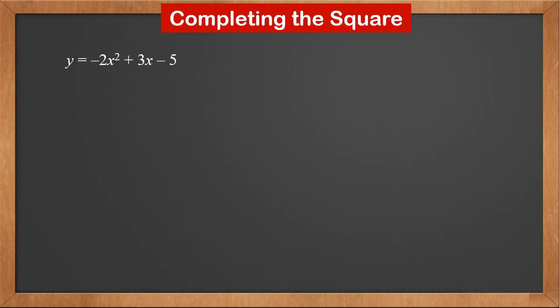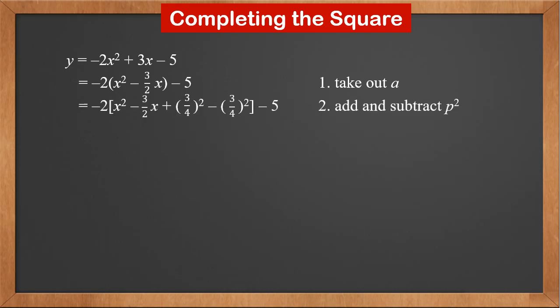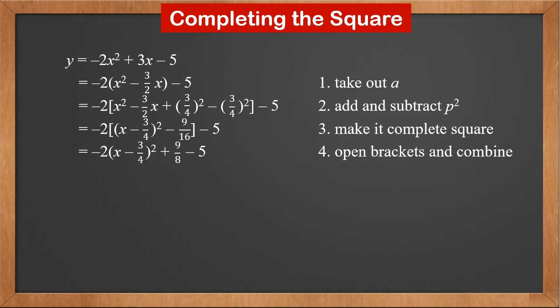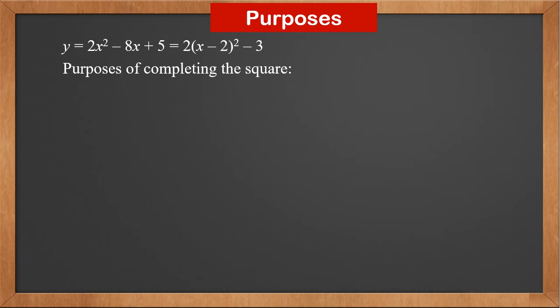Let's look at another example: y = -2x² + 3x - 5. We take out -2 and get -2(x² - (3/2)x) - 5. Half of 3/2 is 3/4, so we add and subtract (3/4)² inside the brackets. Inside the brackets we have (x - 3/4)² - 9/16. Multiplying -2 inside gives -2(x - 3/4)² + 9/8 - 5. The final result is -2(x - 3/4)² - 31/8.